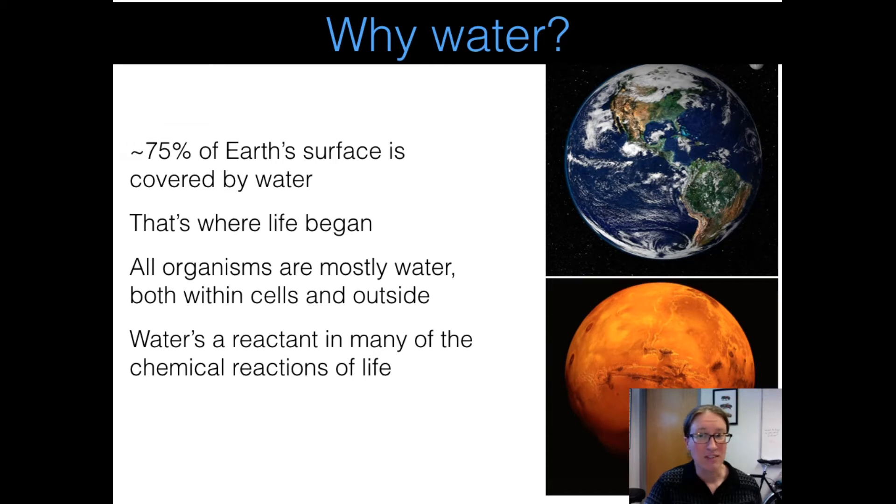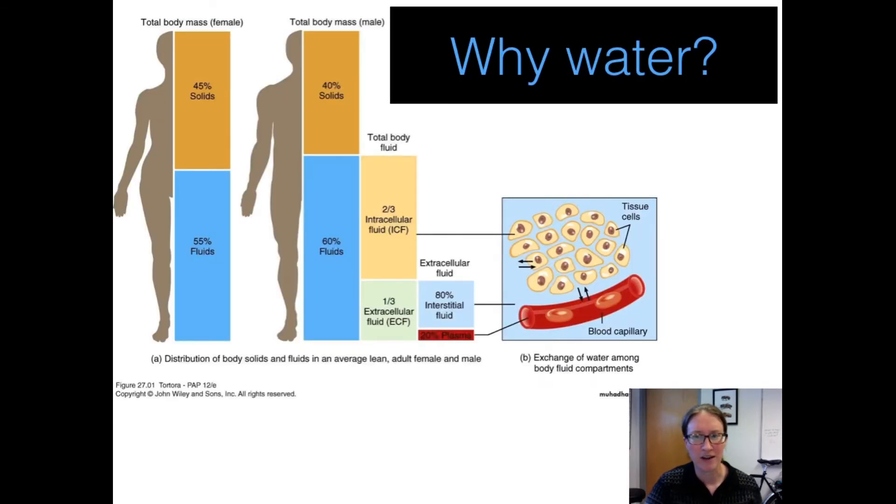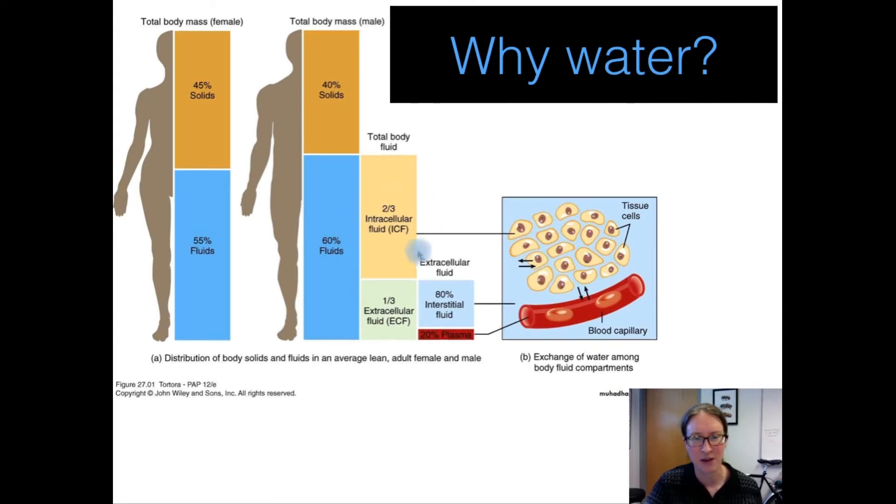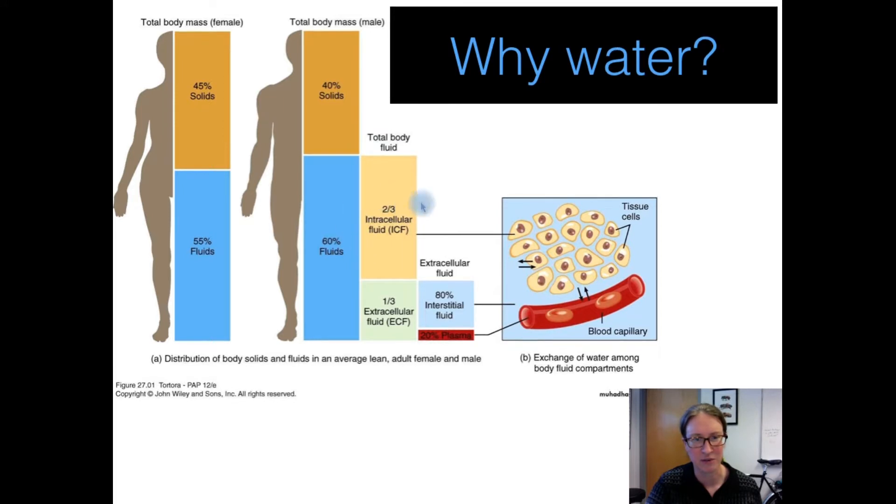Third, all living organisms are mostly composed of water, both inside of cells and surrounding cells. For example, here's a diagram that shows the overall body composition for your average woman and man. Notice that for both men and women, over half of what we're made of is water. And the diagram also shows you a little bit more about where some of that fluid's located. About two-thirds of it is found inside of cells, that's this intracellular fluid compartment here. And then another one-third of it is actually in the space that's in between cells, this extracellular fluid or what's termed interstitial fluid and then blood plasma.